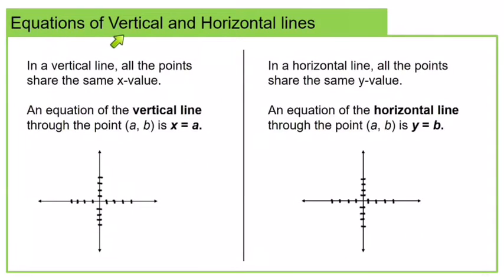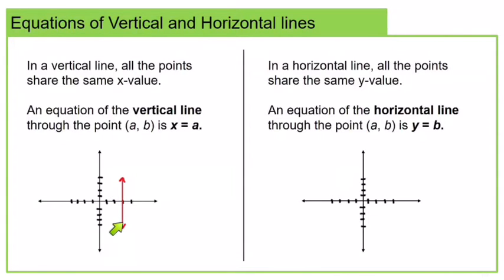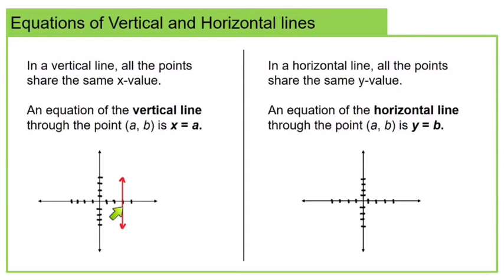Now we're going to talk about equations of vertical and horizontal lines. In a vertical line, all the points have the same x value. Notice that its slope is undefined, and also notice that it's not a function. We don't really need to calculate anything — every x value is the same, so all we need for this line's equation is x equals whatever that x value is. In this case, it would be x equals 3.